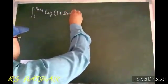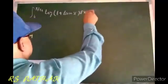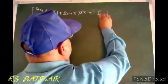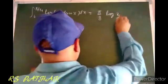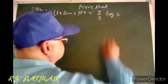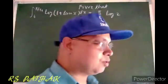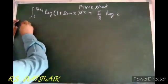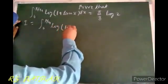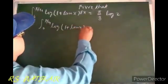The next question: prove that the integral from 0 to π/4 of log(1 + tan x) dx equals π/8 · log 2. We start by letting I equal the integral from 0 to π/4 of log(1 + tan x) dx. We will apply the property that the integral from 0 to a of f(x) dx equals the integral from 0 to a of f(a - x) dx.